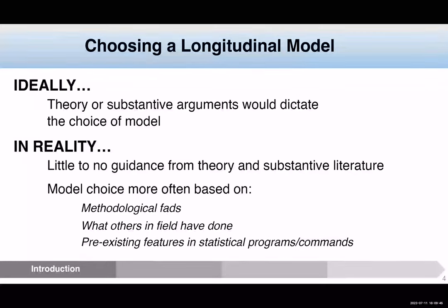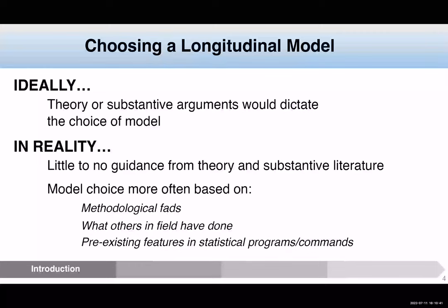When I hear that type of advice, I'd love to ask the follow-up question: okay, what does theory say in this particular area that's going to dictate a particular model? The fact is, we're kind of on our own. The end result is we have customs in different disciplines. Coming from economics, political science, or sociology, you're more likely to use a fixed effects model or choosing between fixed and random effects. In psychology, growth curves are very popular, or autoregressive models. So what you're really looking at are customs of different groups determining what model we're using.